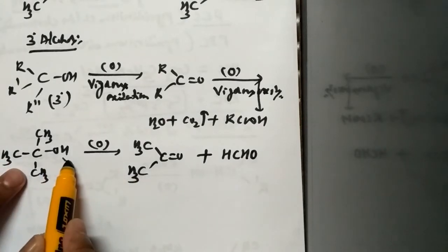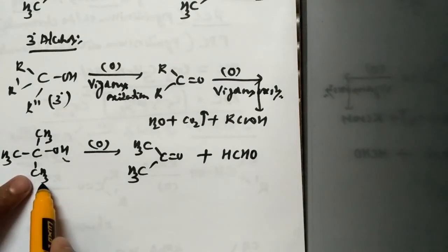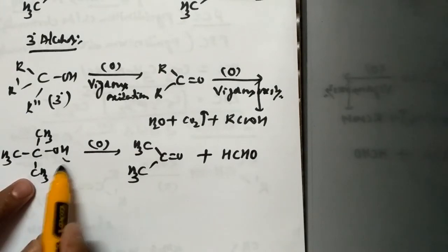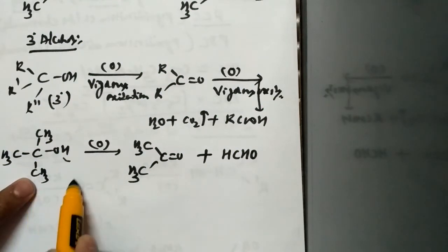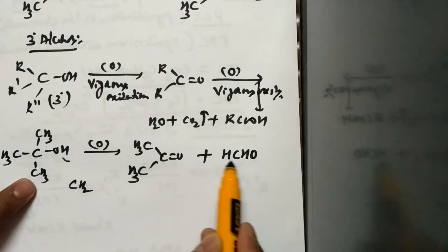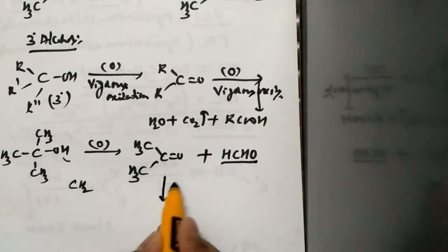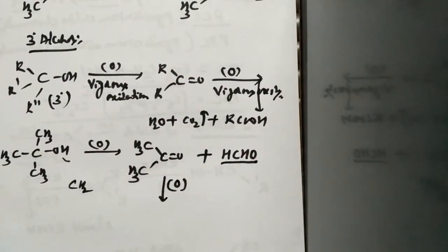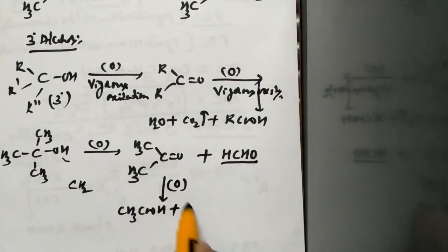The remaining CH₃ and H, when further subjected to oxidation, loses a water molecule — leaving C and two hydrogens — which combines with one oxygen to form HCHO, that is acetaldehyde. When this ketone is further subjected to oxidation we get CH₃COOH, which is acetic acid, and the one carbon with two hydrogens gives formic acid.